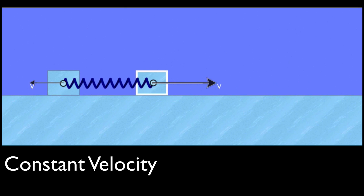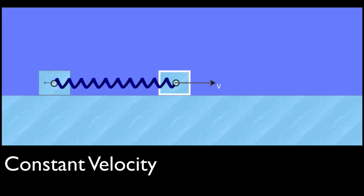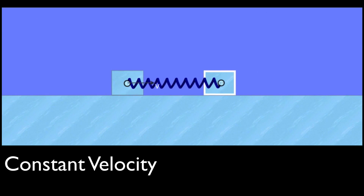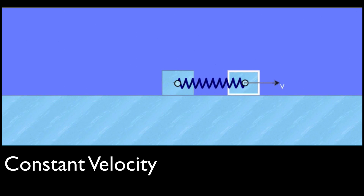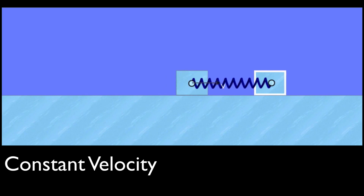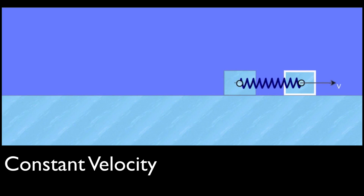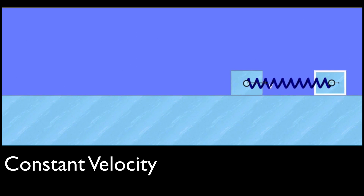Now let us try a harder one. We have got a force on both of these bricks on either side. Again, try to hold your finger in between those two bricks on the spring itself. What I am finding is it is not moving as quickly, but it is still moving with constant velocity from left to right.